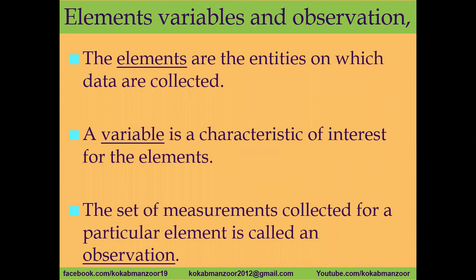What are variable, elements, and observations? Elements are the entities on which the data are collected — those things against which we are collecting the data. For example, if you are a medical student collecting data on patients, the patients will be the elements. Variables are the things you are interested in, like patients' blood pressure, blood sugar level, or heart rate. The set of measurements collected from a particular element is called an observation — whatever information we collect about one element is its observation.